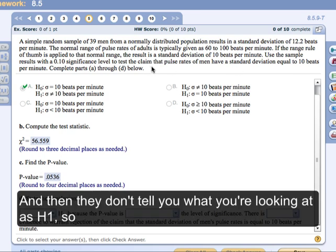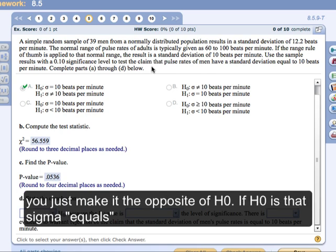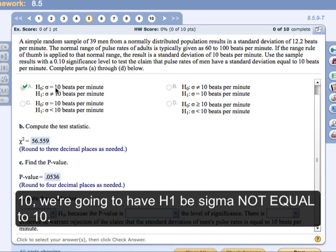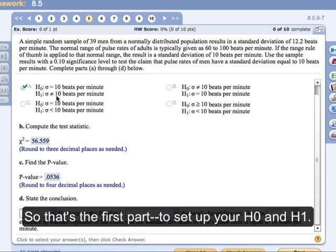And then they don't tell you what you're looking at as an H1, so you would just make it the opposite of H0. So if H0 is that sigma equals 10, we're going to have H1 be sigma not equal to 10. So that's the first part, to set up your H0 and your H1.